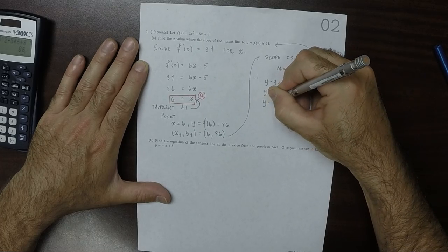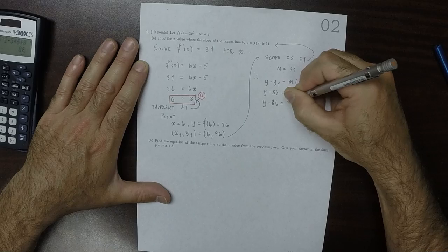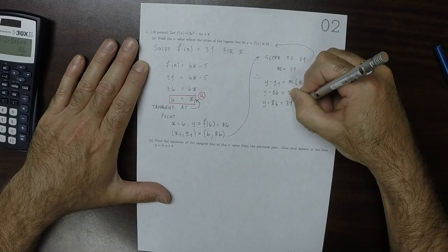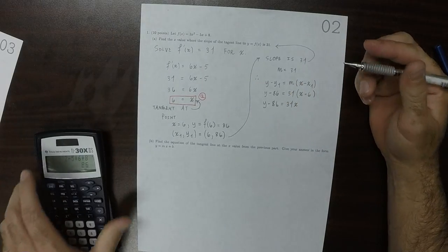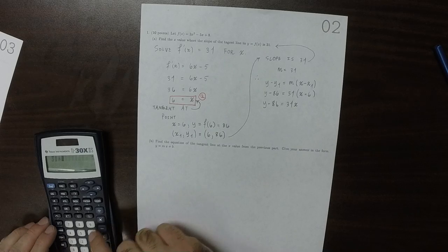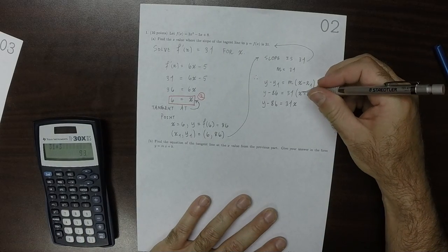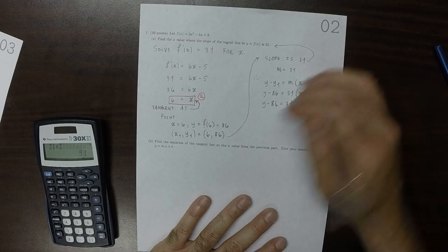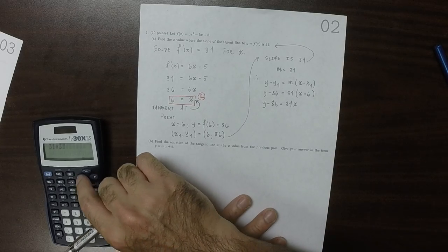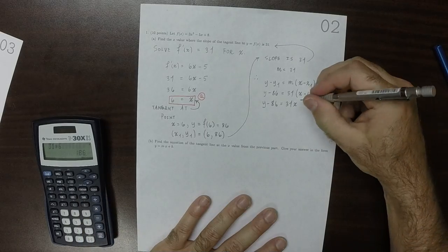So y minus 86 is 31x, and then minus... 31 times 6... 186.